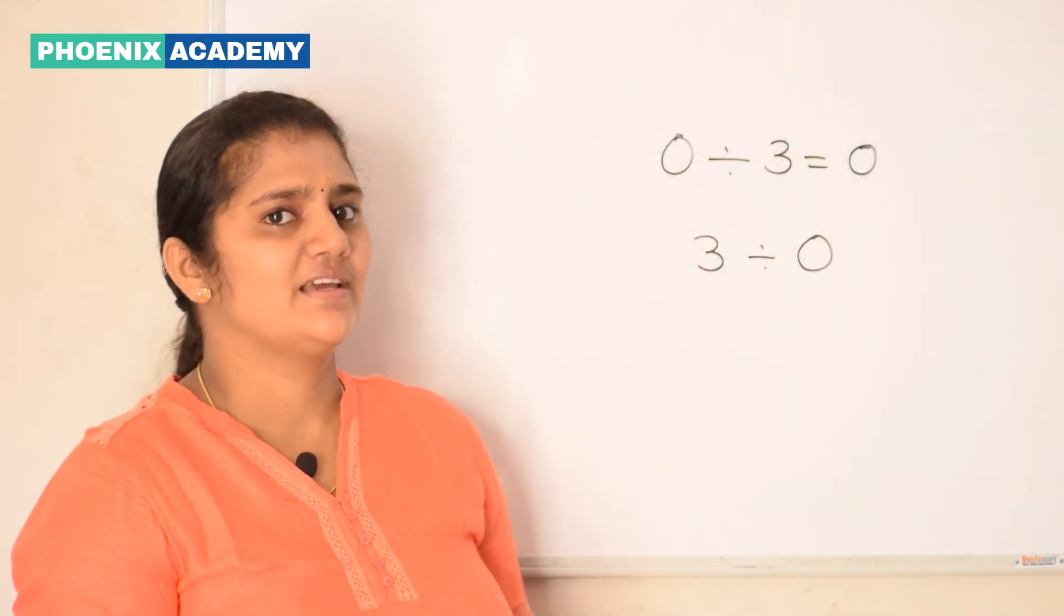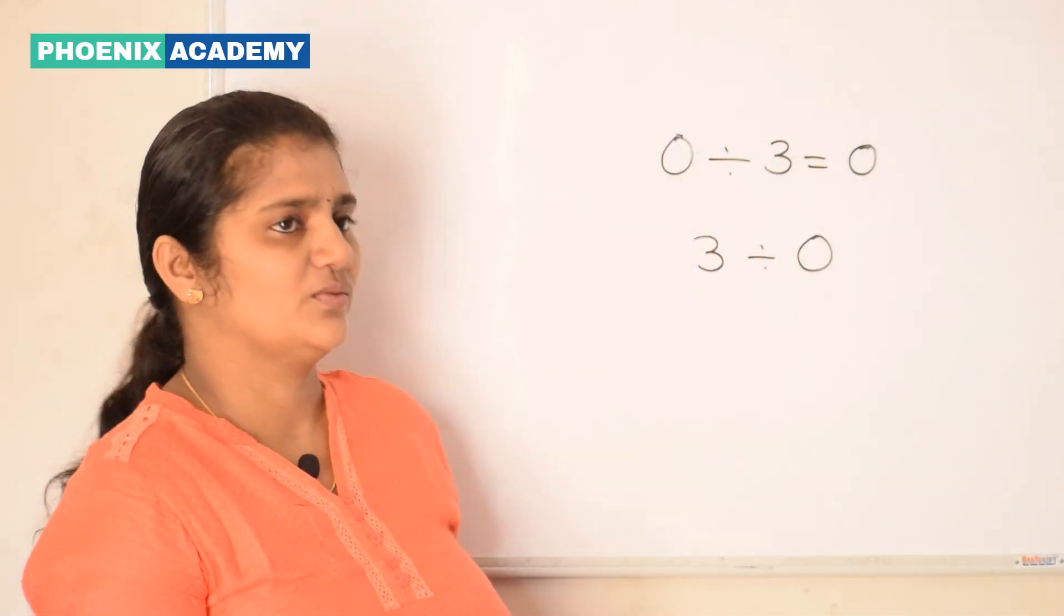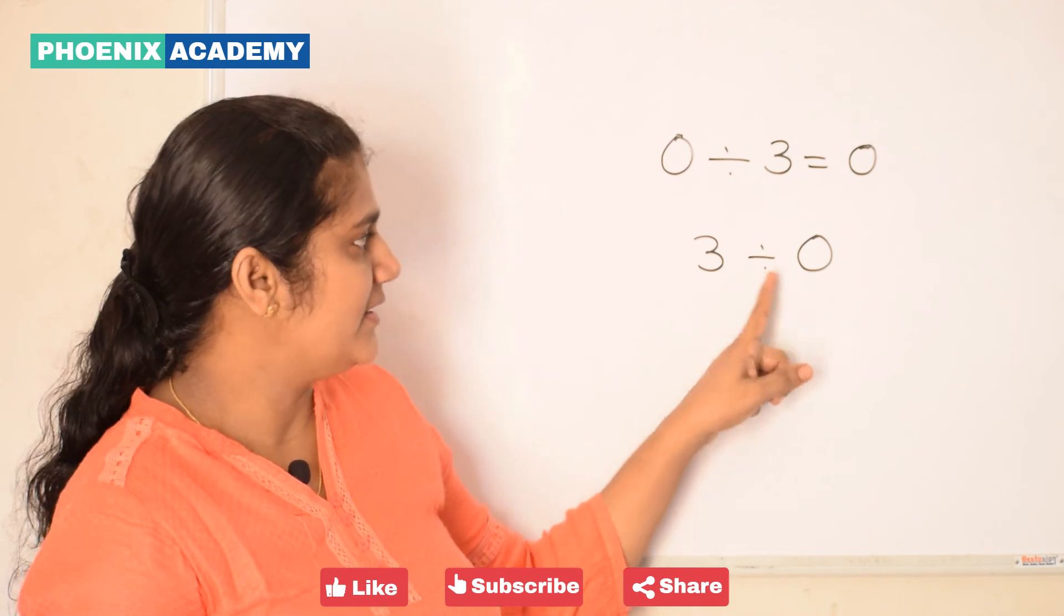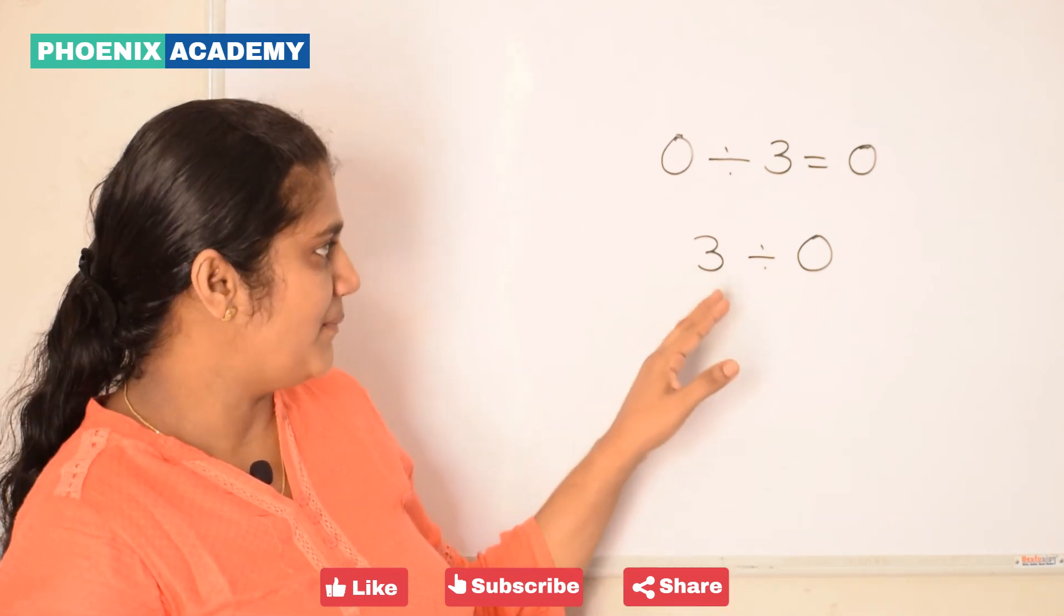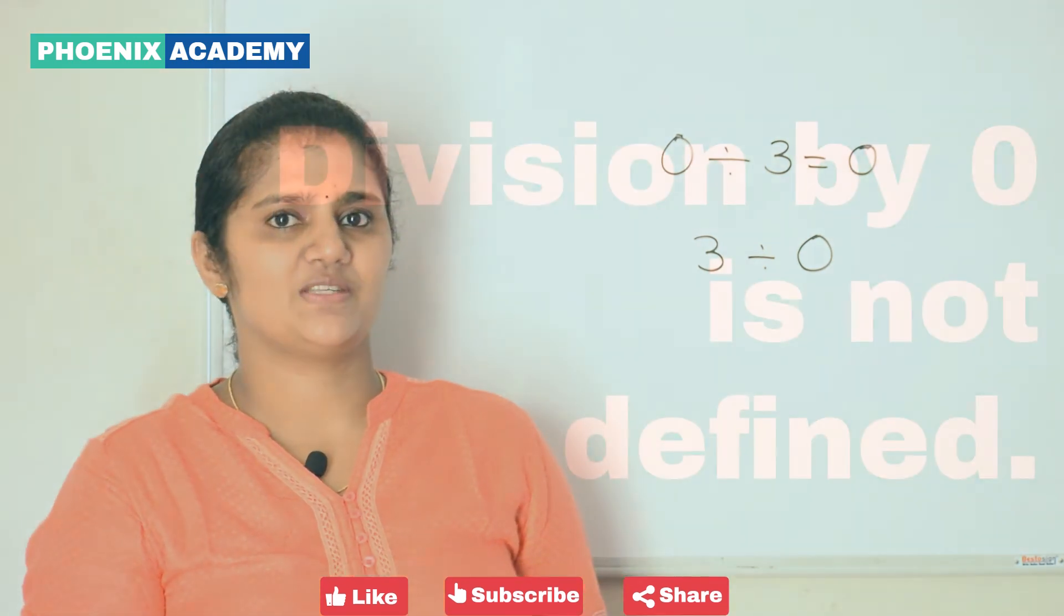Fourth property is division by 0. 3 divided by 0. This is not defined. A number divided by 0 is not possible.